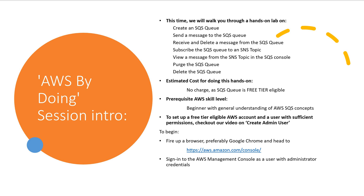Estimated cost for this hands-on: No charge, as SQS queue is free tier eligible. Prerequisite AWS skill level: Beginner with general understanding of AWS SQS concepts. To set up a free tier eligible AWS account and a user with sufficient permissions, check out our video on Create Admin User. To begin, fire up a browser, preferably Google Chrome, and head to aws.amazon.com. Sign in to the AWS Management Console as a user with administrator credentials.